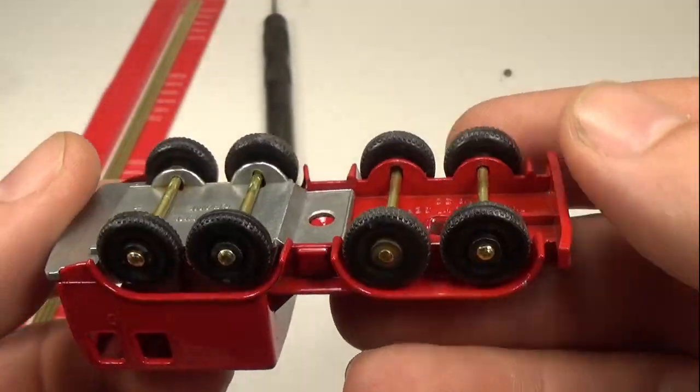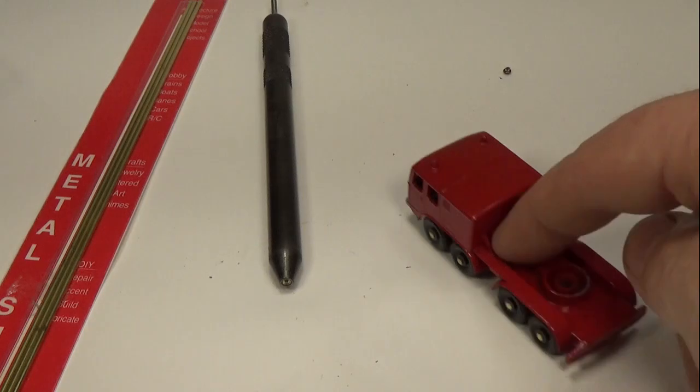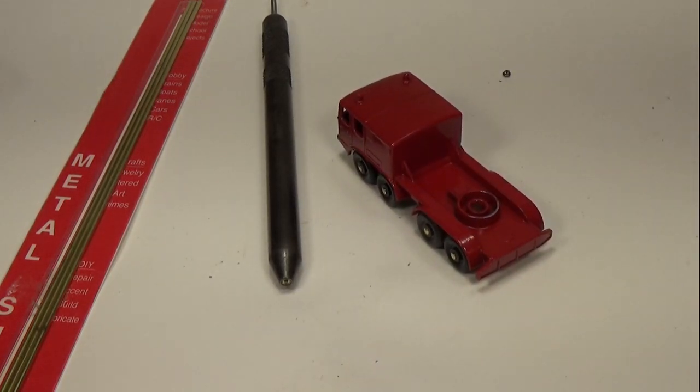Here's how it looked after all the wheels and axles were put on. Each wheel spins freely and the crane rolls. Or it rolls as good as any vintage Matchbox rolls.